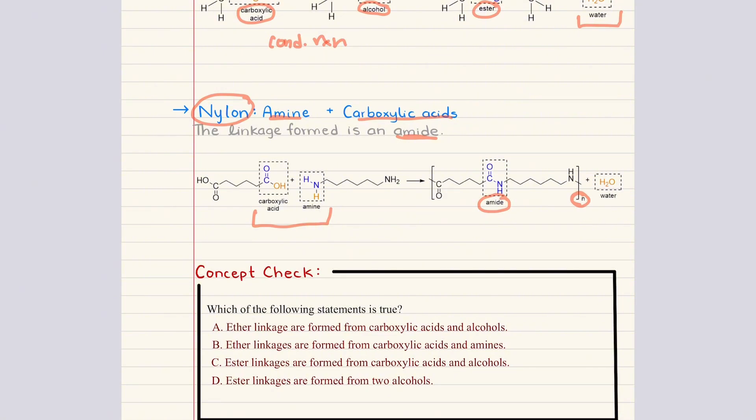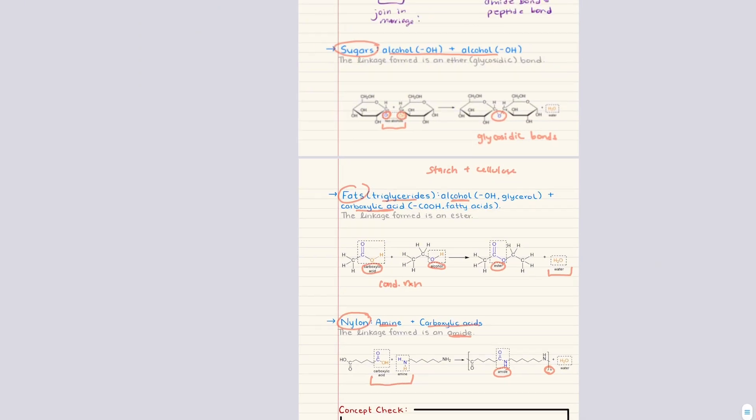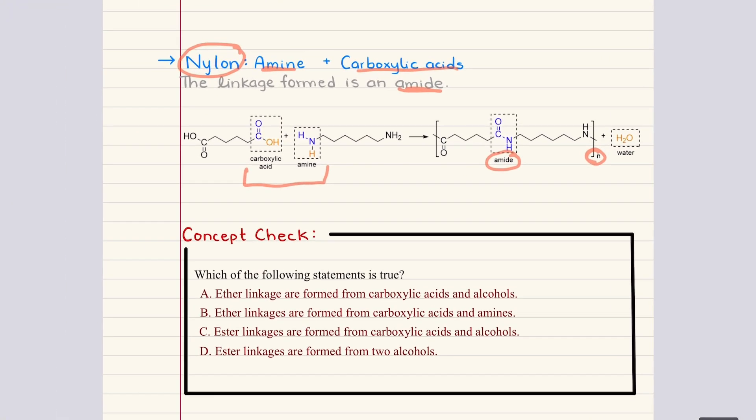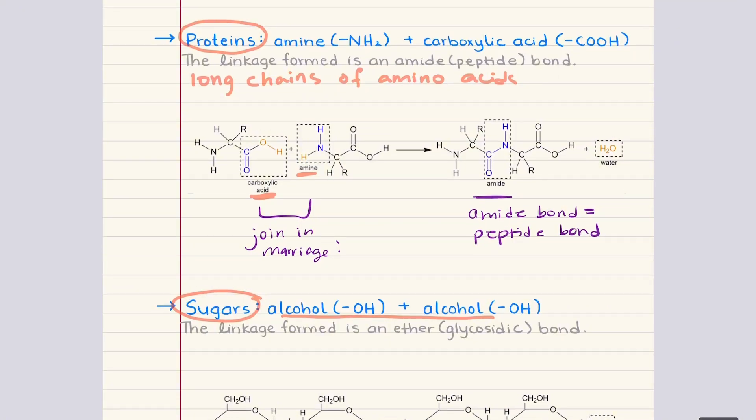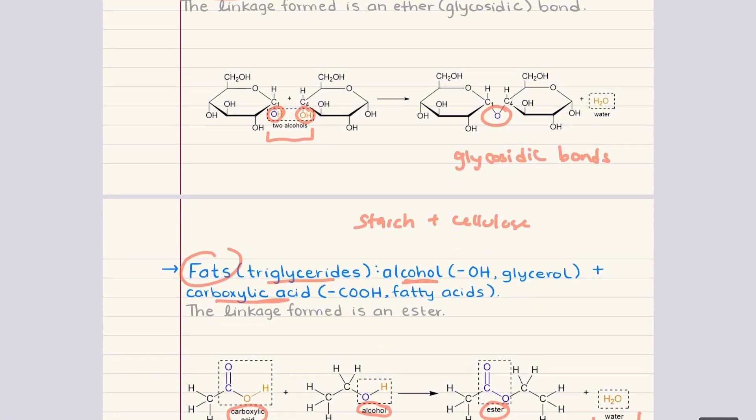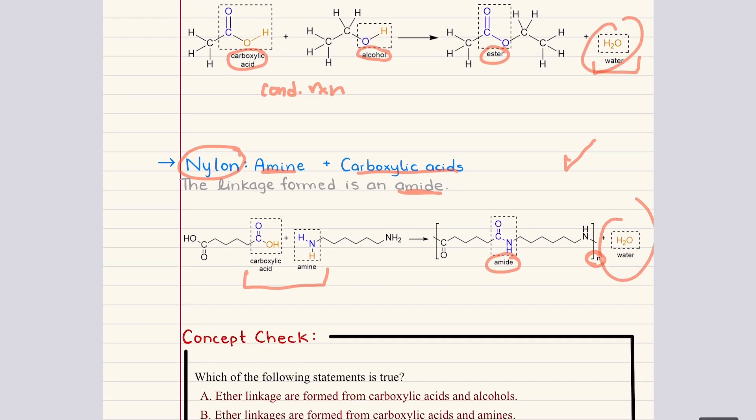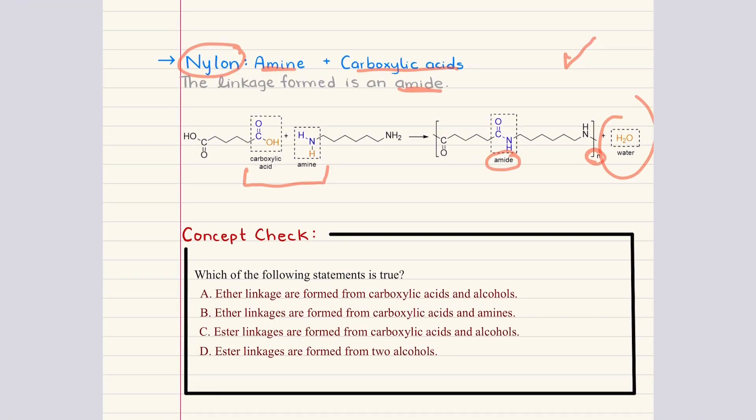And these examples show that whether we're forming a natural polymer such as proteins, sugars, and fats, or a synthetic polymer such as nylon or polyester, the same functional groups drive the chemistry. Alcohols combine with acids to form esters. Amines combine with acids to form amides. Alcohols combine with alcohols to form ether linkages. And in every case water is released, which is the defining feature of condensation polymerization. And by recognizing which functional groups are reacting, we can immediately predict the linkage that will form regardless of whether the polymer is part of a living system or part of a manufactured material.